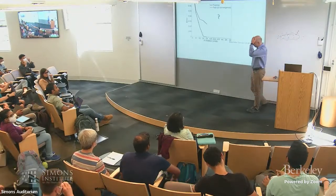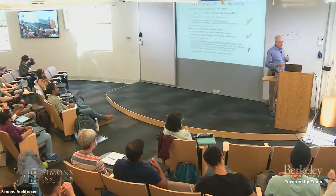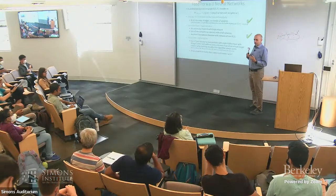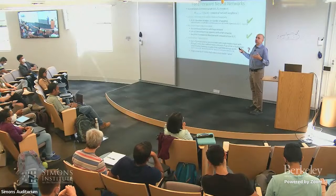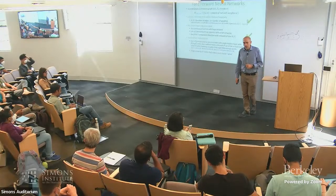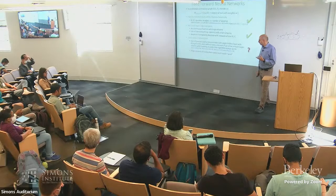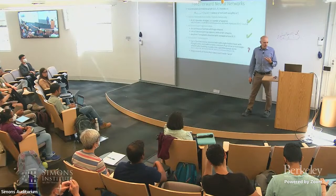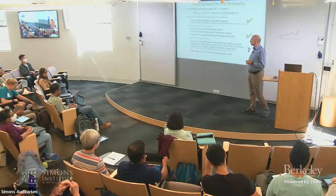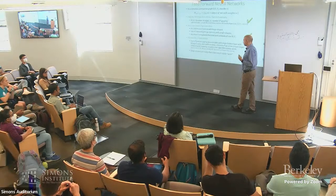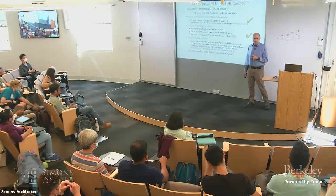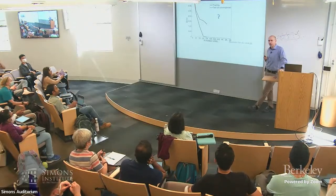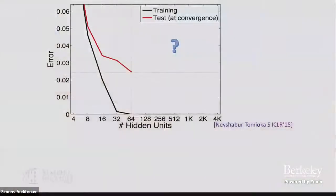I think many of you have seen this before. We have this view of what we've talked about so far: capacity and inductive bias, or capacity control, in terms of the network — in particular, the size of the network — and the hypothesis class, i.e., the functions we can fit with a neural net. About seven or eight years ago, we did some experiments that really changed the way I think about many of these things. I'm curious how many of you have seen this plot before, and how many haven't.